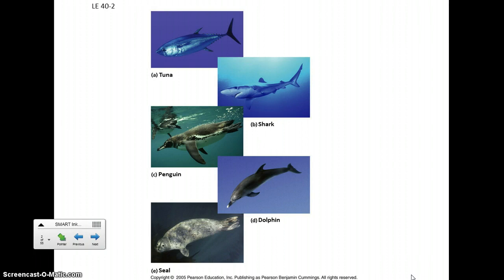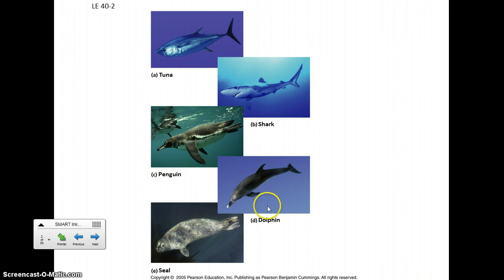One thing to think about as we talk about form and function is how form basically fits function. We have different types of animals — fish, birds, and mammals — who are clearly very different from each other, yet all being aquatic in one way or another, they all have a similar body shape and limbs geared towards helping them swim. The bird's wings are its front flippers, and the forelimb of the seal and the dolphin are for swimming as well, with that streamlined body to help them move quickly through the water. The seal's back legs serve as a tail flipper, like the equivalent of the tail fin of the shark.